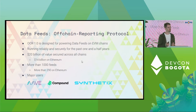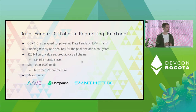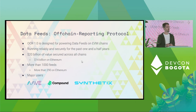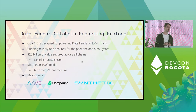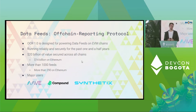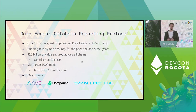It's been very successful. We designed it for powering data feeds on EVM chains. It's been running reliably and securely for, at this point, one and a half years in production. It secures roughly $20 billion of value across all the various chains that Chainlink is active on — $14 billion just on Ethereum. There are more than 1,000 feeds across all the chains, and more than 290 of those are on Ethereum. Major DeFi protocols like Aave, Compound, and Synthetix all use this.